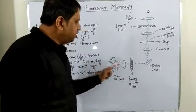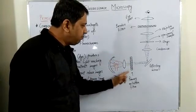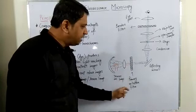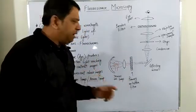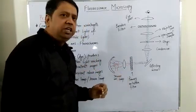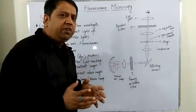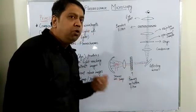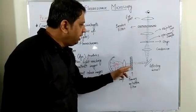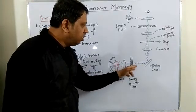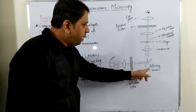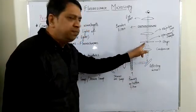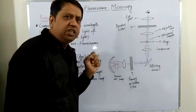This light passes through a primary excitation filter. The function of the primary excitation filter is to cut all kinds of radiation and allow only blue light to pass through. This blue light then passes through a reflecting mirror and condenser, and is focused onto the specimen placed on the stage.